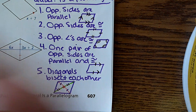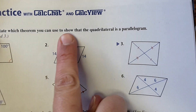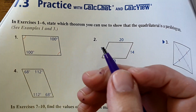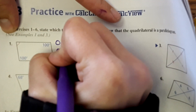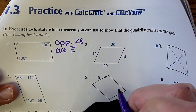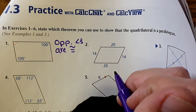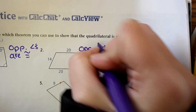Now using these theorems we're going to answer the rest of the questions. It says: state which theorem you can use to show that the quadrilateral is a parallelogram. In this first one it shows that both pairs of opposite angles are congruent, so it is a parallelogram because opposite angles are congruent. Number two shows that opposite sides are congruent — both pairs — so it is a parallelogram because opposite sides are congruent.